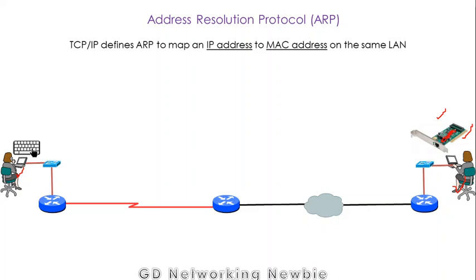Hi everyone. Today we are going to discuss Address Resolution Protocol, ARP. TCP/IP Protocol Suite defines many protocols and ARP is one of them. The job of ARP is to map an IP address to the MAC address on the same local area network. If you know the IP address of some node on the local area network and you do not know the MAC address, then ARP protocol will help us find out the MAC address of that particular node.